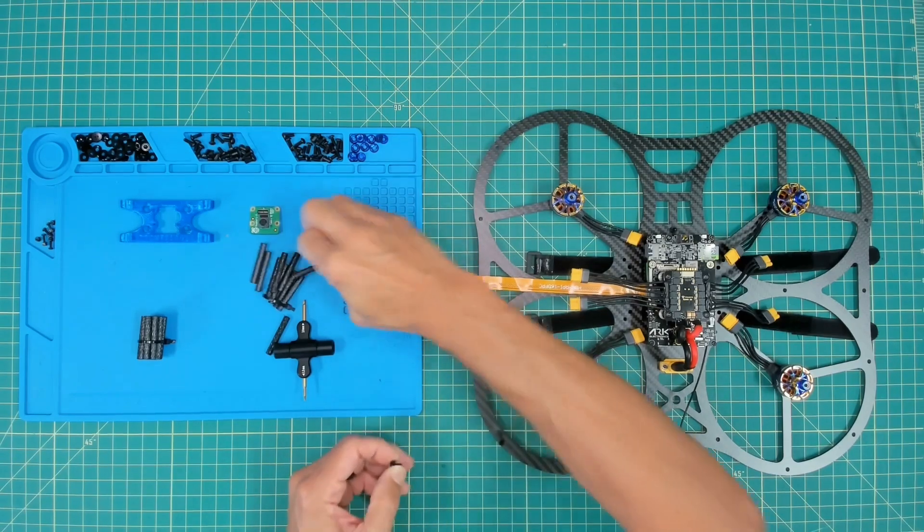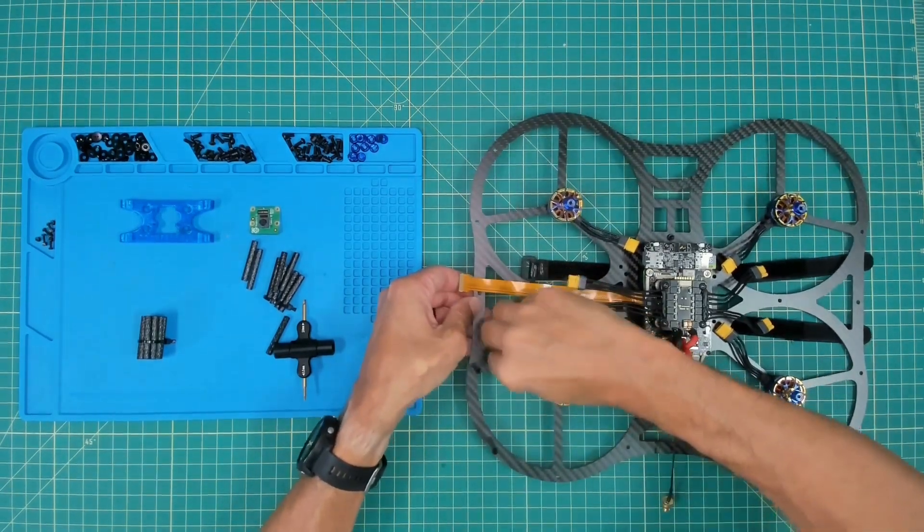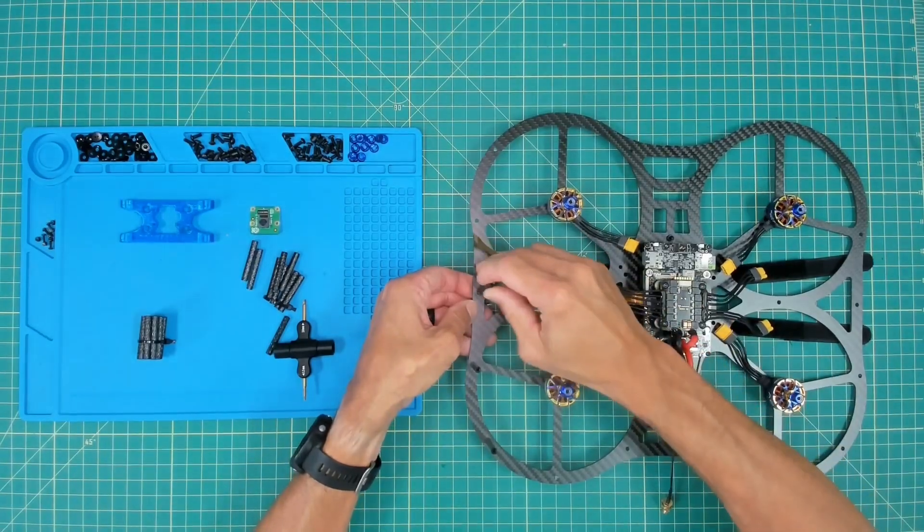I'll continue by placing the eight millimeter screw through the washer. We'll go around the outside of the frame and then there are a few standoffs that we want to do on the inside.